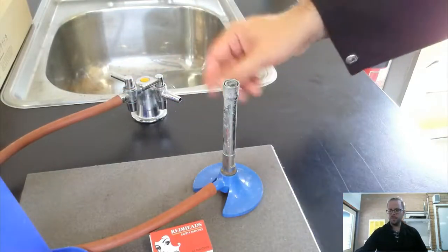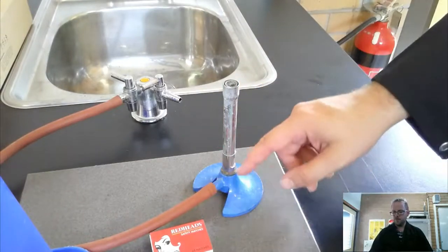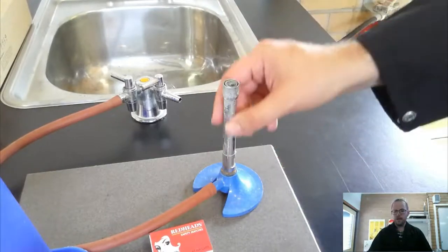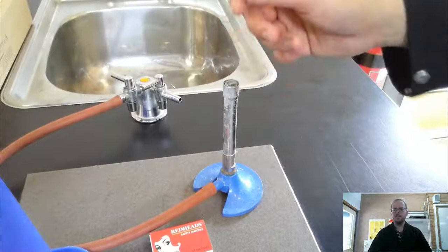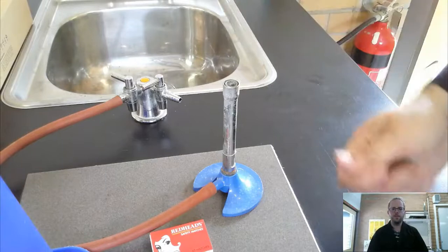That allows the gas to flow from the tap through there and then into the Bunsen burner. The gas goes up through this chimney, it's called, and then we light it so that the flame is here at the top. And that's where the heating flame comes from.